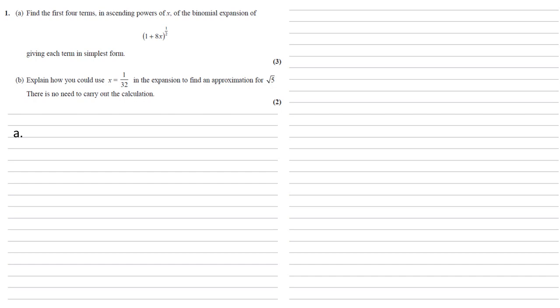We need to find the first four terms in ascending powers of x of the binomial expansion of (1 + 8x)^(1/2), giving each term in its simplest form.